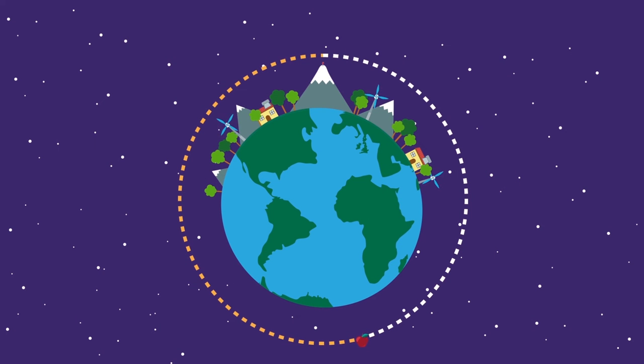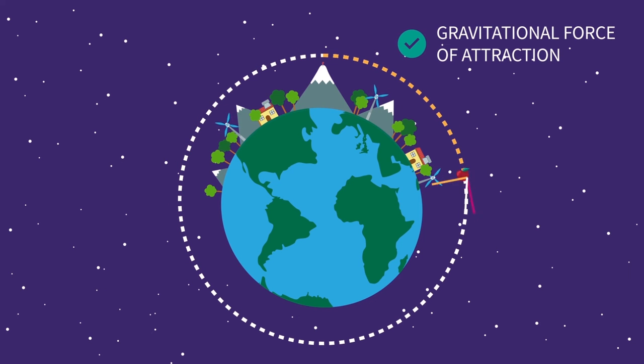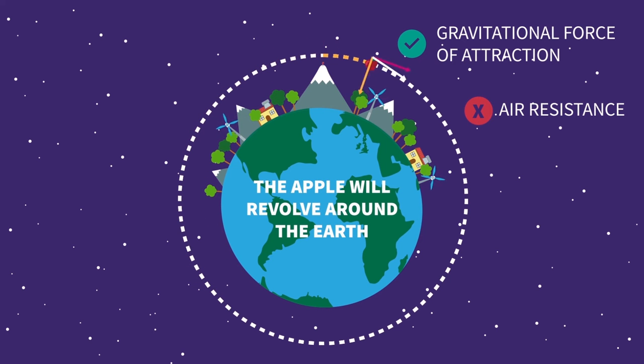When the apple escapes the Earth's atmosphere, the only force acting upon it is the gravitational force of attraction. There is no air resistance to slow the apple down. With the apple moving sideways with a constant high speed and the gravity pulling it downwards towards the Earth, the apple will revolve around the Earth.